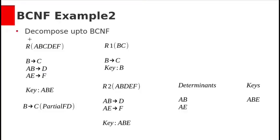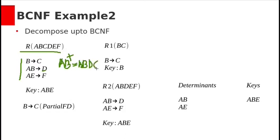Let us see another example: decompose relation R with attributes A, B, C, D, E, F up to BCNF. The functional dependencies are: B derives C, AB derives D, and AE derives F. If we calculate the closure of AB: AB can derive D, and B can derive C, giving us ABCD. But we cannot derive F without E, so adding E, the closure of ABE gives ABCDE, and with A and E we can also derive F. So the key is the combination ABE.